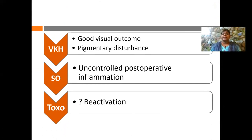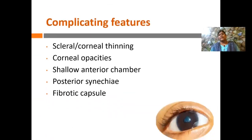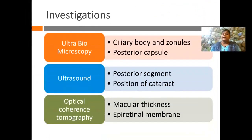VKH patients usually have good visual outcome if inflammation is well controlled. A few patients may have pigmentary disturbances at the macula preventing early diagnosis of post-operative CME — whenever post-operative vision doesn't correlate with the clinical picture, do an OCT to diagnose CME early. For sympathetic ophthalmia, unless pre-operative inflammation is well controlled the post-operative period can be disastrous. For complicating features, look for corneal opacity, sterile corneal thinning, shallow anterior chamber, posterior synechiae, and fibrotic anterior capsule. UBM may be needed to look at ciliary body and zonules, or the posterior capsule, as some patients may have had secondary angle closure or intravitreal injections causing lens touch and PC damage.